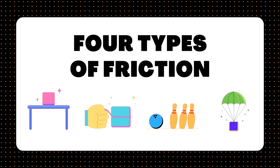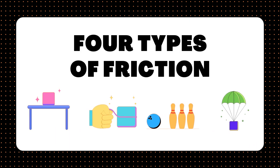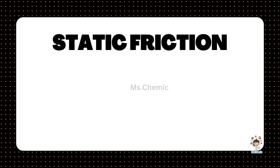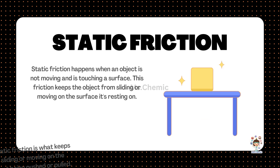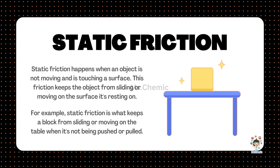4 Types of Friction. Static friction happens when an object is not moving and is touching a surface. This friction keeps the object from sliding or moving on the surface it's resting on. For example, static friction is what keeps a block from sliding or moving on the table when it's not being pushed or pulled.